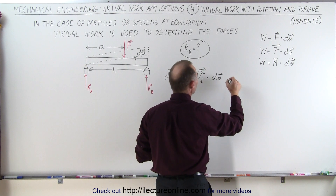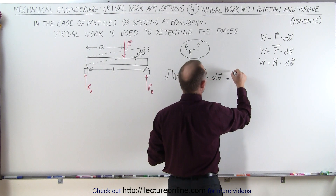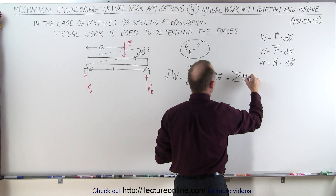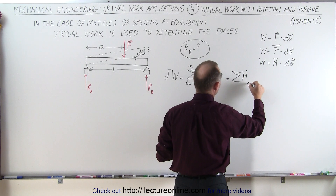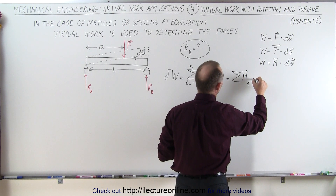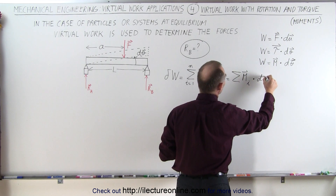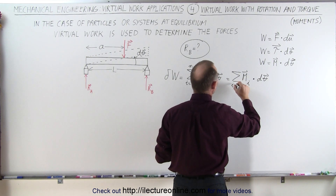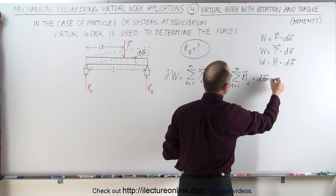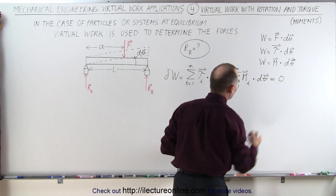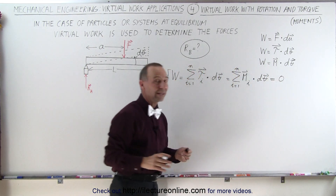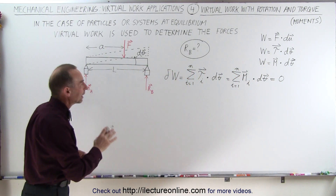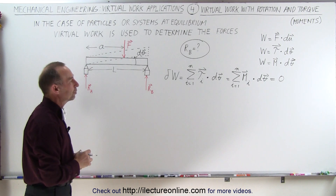Or, if you prefer, that's equal to the sum of all the moments multiplied times the small angular displacement from i equals 1 to n. And if the system is at equilibrium, then we know that must be equal to zero.